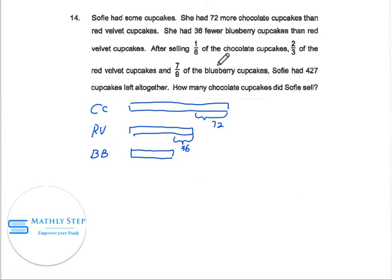After selling one-sixth of chocolate cupcakes, let's represent all this as the cupcakes that she sells. So this is one-sixth, two-thirds of RV, and seven-ninths of BB. She had 427 cupcakes left altogether. And we are trying to find out how many chocolate cupcakes Sophie sold.